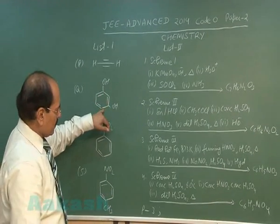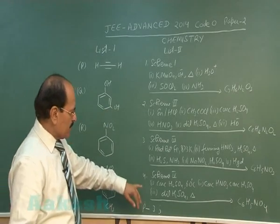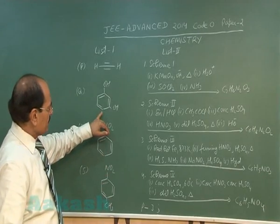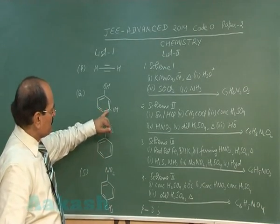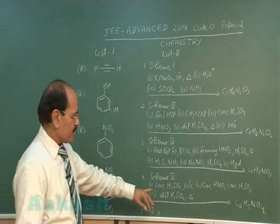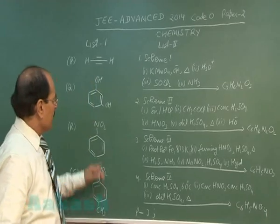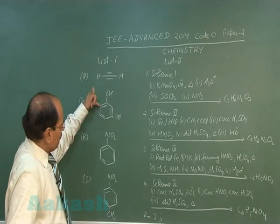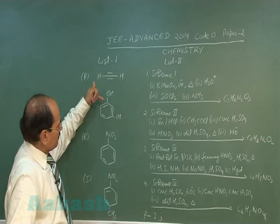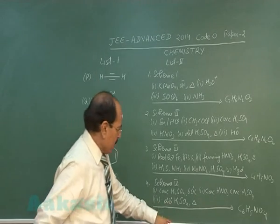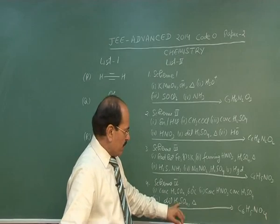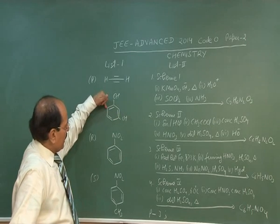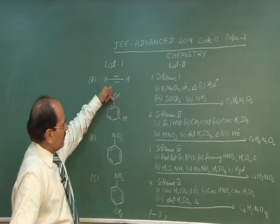Compound Q is resorcinol. Resorcinol is subjected to sulfonation. Both the OH groups are ortho-para directing. The sulfonic acid group will appear at the ortho position with respect to either of the two OH groups. This is subjected to nitration. The sulfonic acid group being meta-directing and OH groups being ortho-para directing, the NO2 group will be introduced at the ortho position with respect to the other OH group. This on hydrolysis undergoes desulfonation.